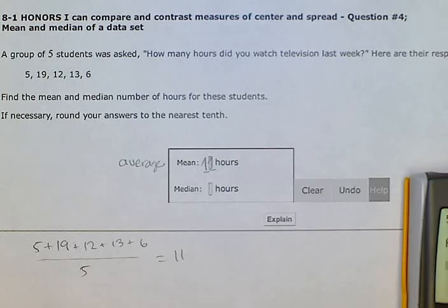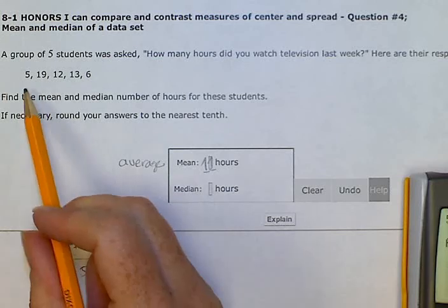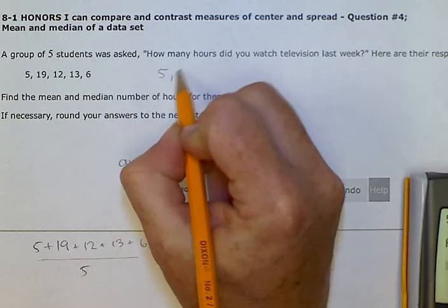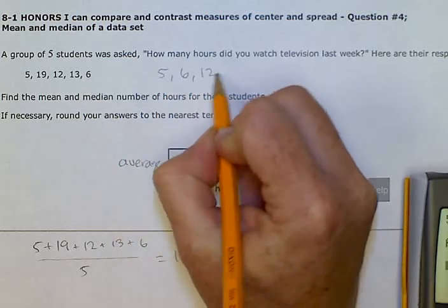Okay, so the median is finding the middle number. So we first need to order the numbers, put them from smallest to biggest. So five, then six, then 12, then 13, then 19.